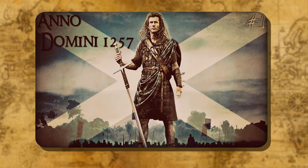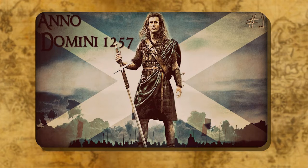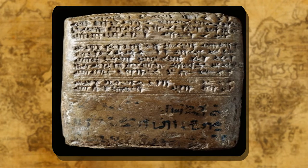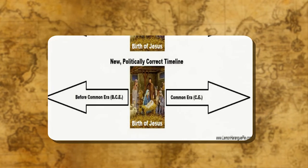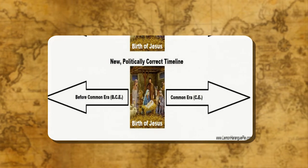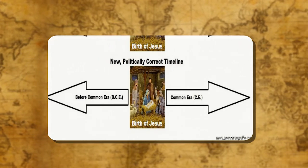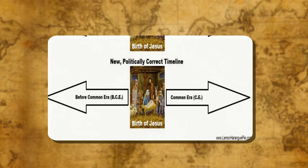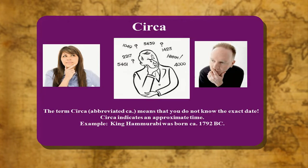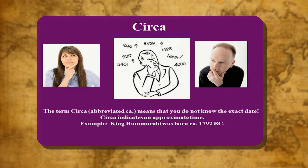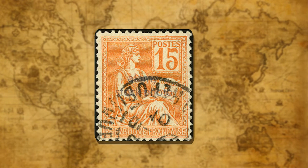Anno Domini is a Latin word which means 'In the Year of Our Lord'. The dates followed by the letters BC go backwards. Sometimes CE (Common Era) and BCE (Before Common Era) are also used in place of AD and BC respectively. If we add 'circa' with any date, it means that such a date is an approximate date and is not exact.